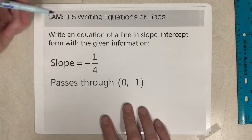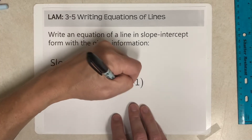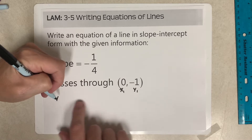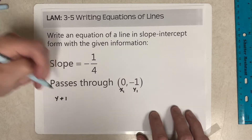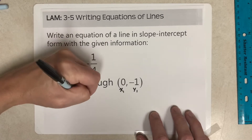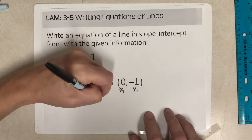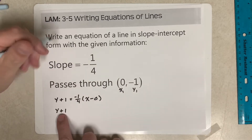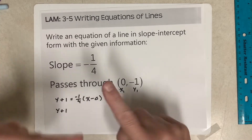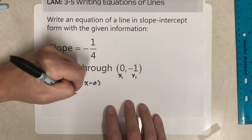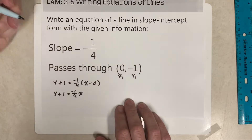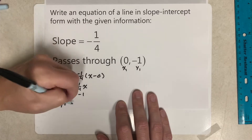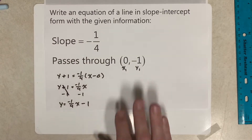Next example: slope of negative 1/4, passing through (0, negative 1). There's x1 and y1. I'm going to write y minus negative 1, which is y plus 1, equals negative 1/4 times (x minus 0), which is just x. Why is it plus 1? Because plugging negative 1 in made two negatives into a positive. So equals negative 1/4 x, and subtracting 1 from both sides gives y equals negative 1/4 x minus 1.